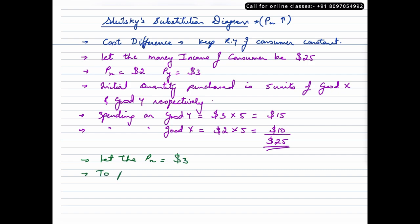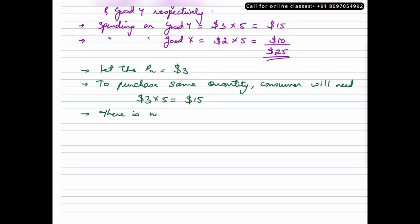Now to purchase same quantity, consumer will need $3 times 5 that is $15. There is no change in good Y.